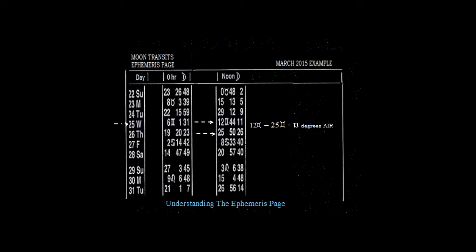On the 27th, March 2015, as an example of the ephemeris page, the noon moon entered 8 degrees Cancer. Compared to the next day, the 28th, Saturday March 2015, we have 8 Cancer minus 20 Cancer equals 12 degrees, and it's a water sign. Remember the water trinity, which is Cancer, Scorpio, and Pisces.